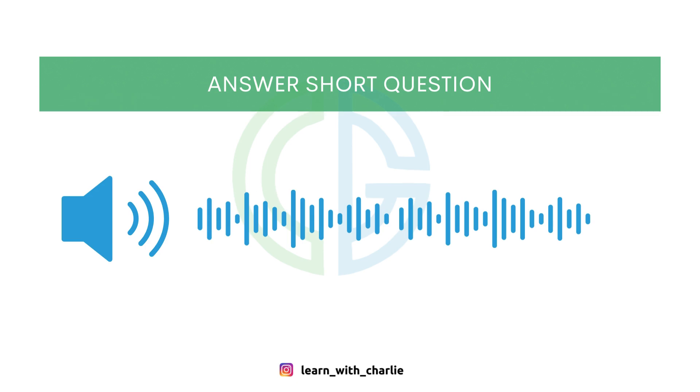If something such as fabric or medicine is artificially made, not natural, what do we say it is?